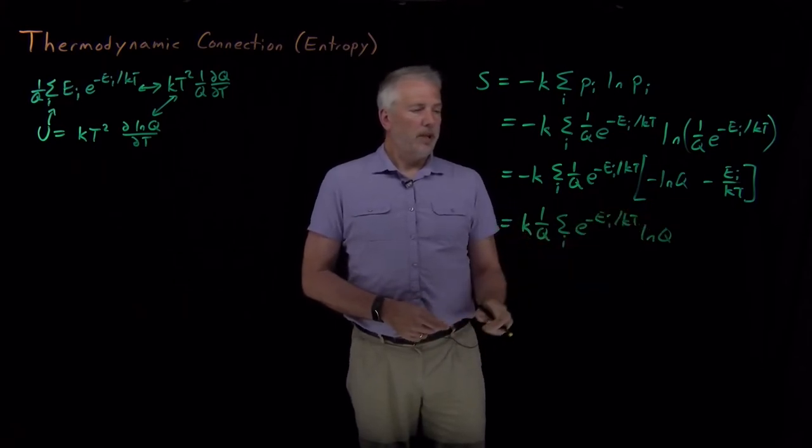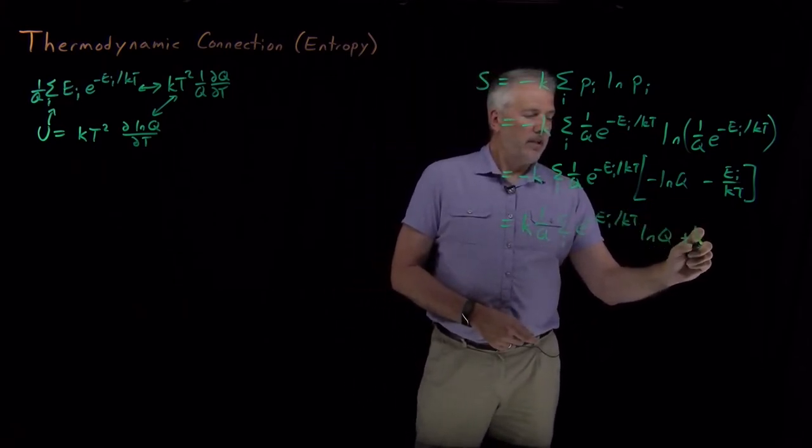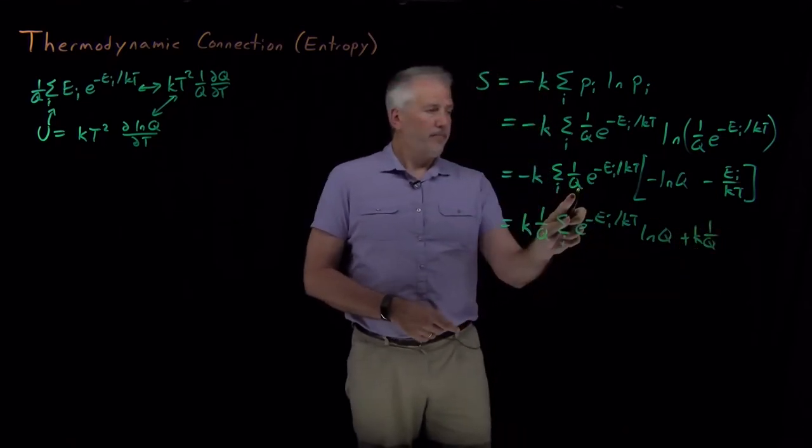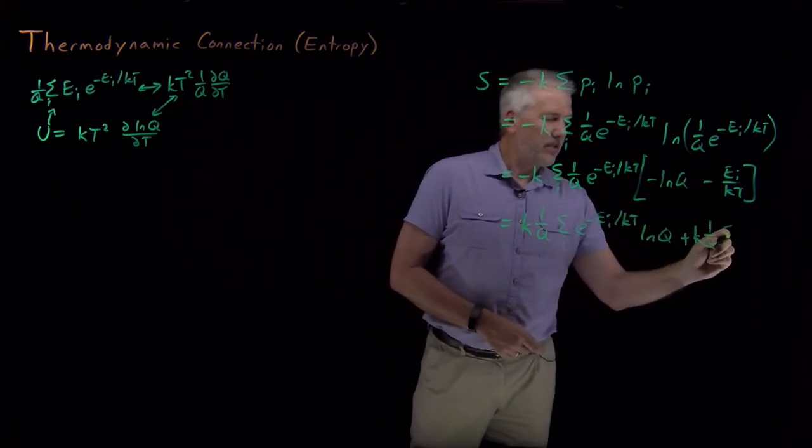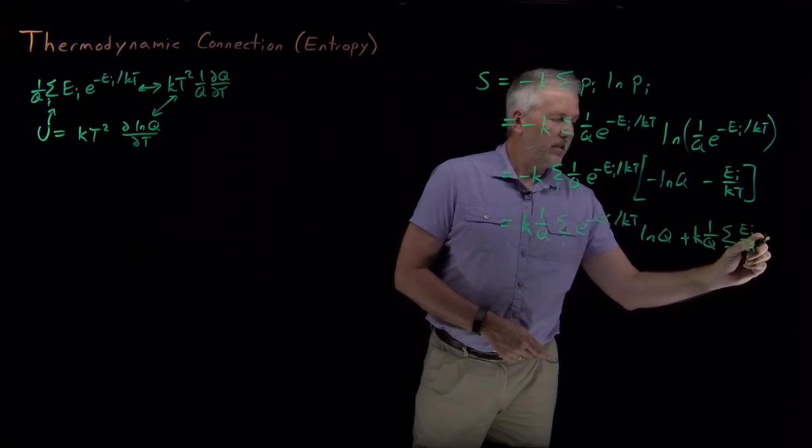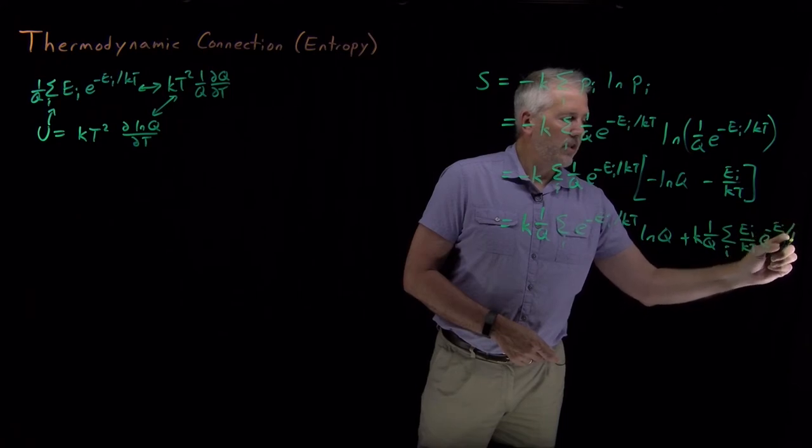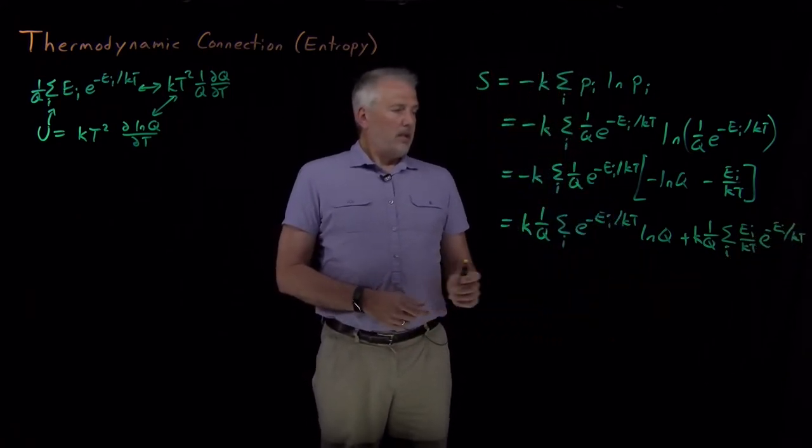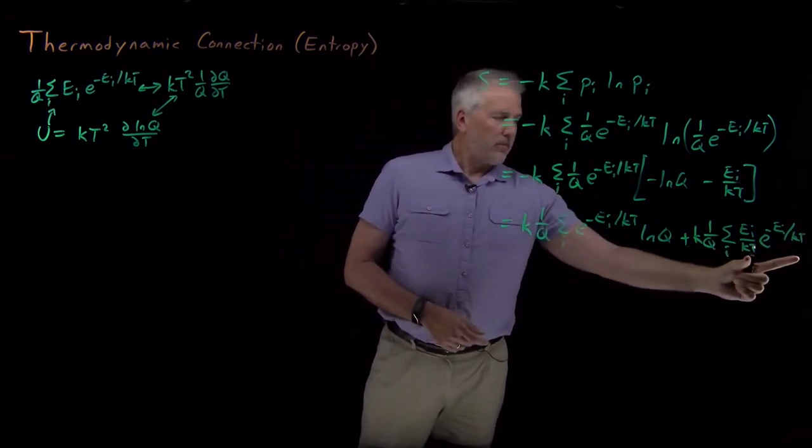That's the first term, and I've got the same thing. Positive k, 1 over q, exponential times energy over kT inside the sum. So energy over kT, e to the minus energy over kT. So I've got two separate sums. I've got the sum of these terms, and I've also separately got the sum of these terms.